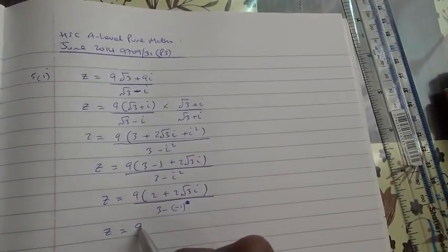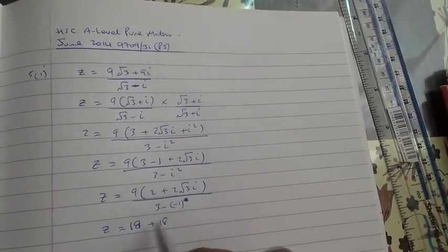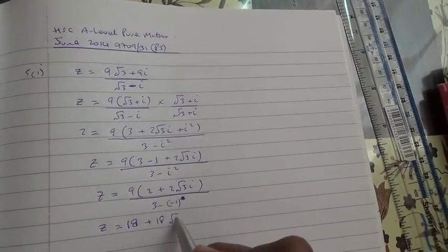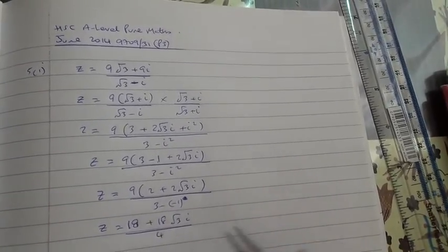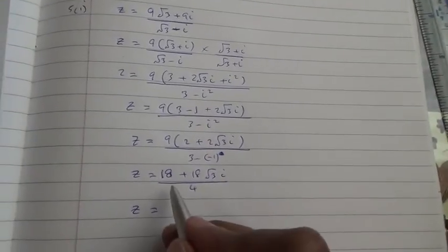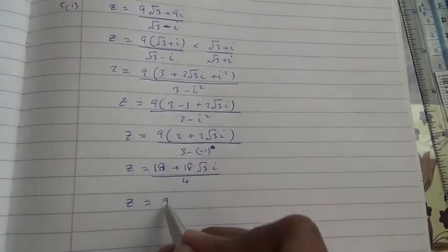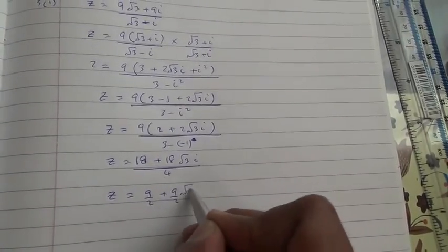9 times 2 again is 18√3i divided by 3 minus minus 1 is 4. That comes down to 18 divided by 4 is 9 divided by 2, 18 divided by 4 is 9 over 2√3i.